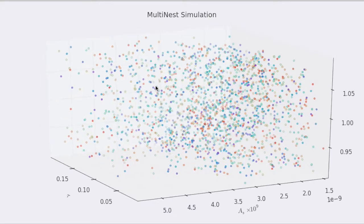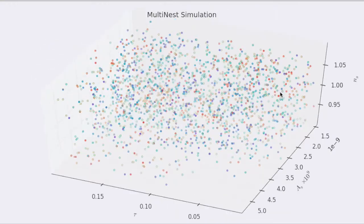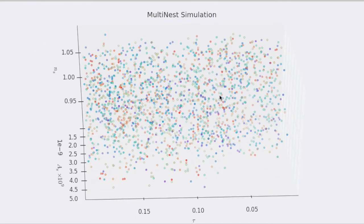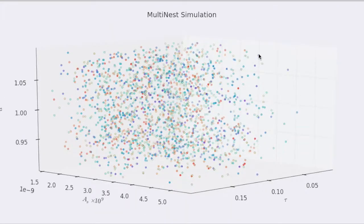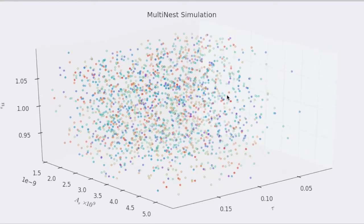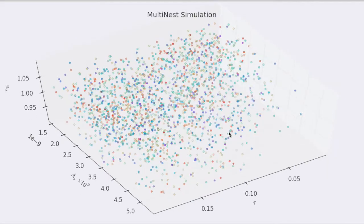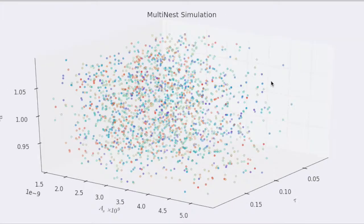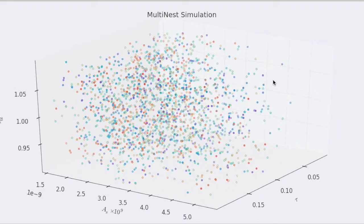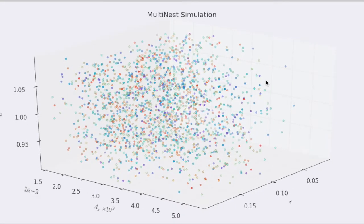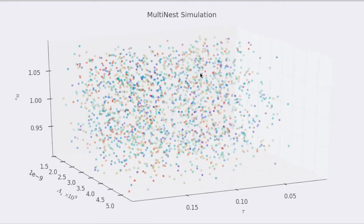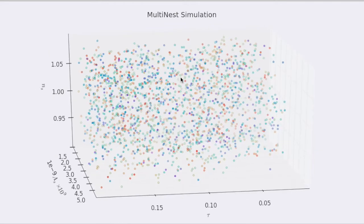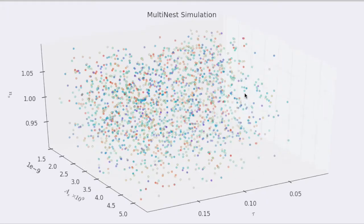So as we can see here we've got a pretty much uniform distribution of points in this parameter space. This is a three-dimensional cross section of a seven dimensional, that is seven parameter model. And as you can see from the axes we have tau the optical depth to reionization, AS the scalar amplitude, and NS the scalar spectral index.